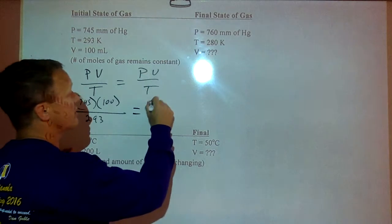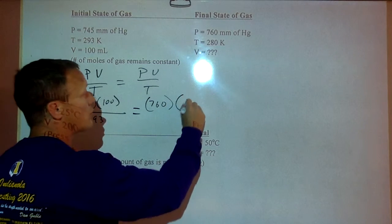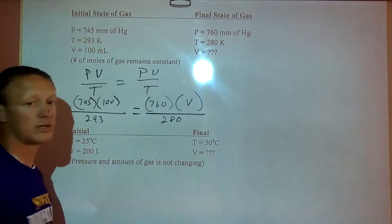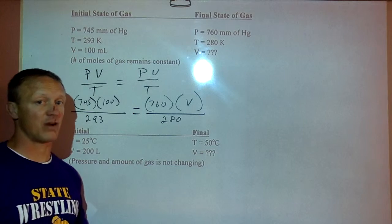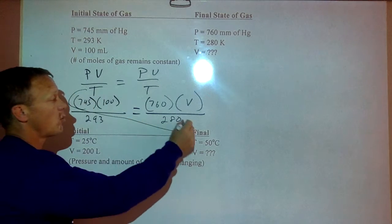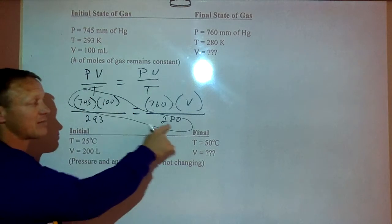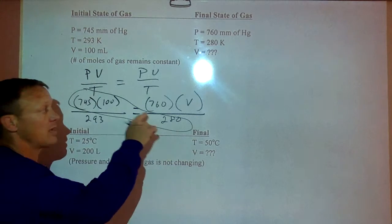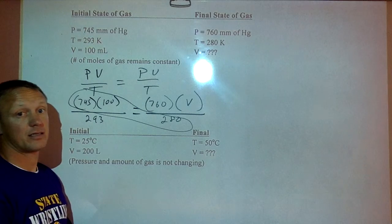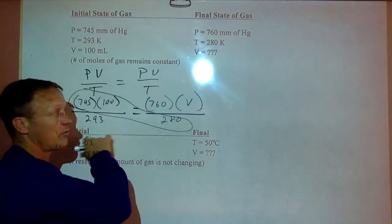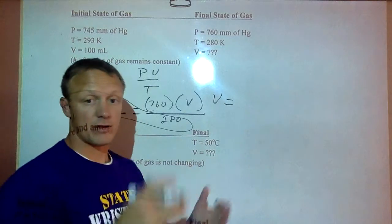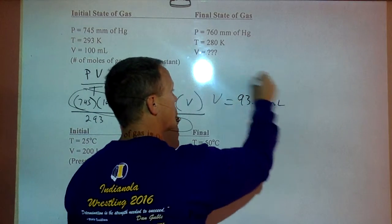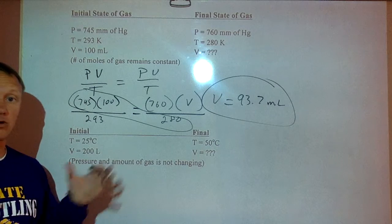If we change the pressure to 760, what is our new volume going to be over T when the temperature is 280? I always cross multiply where there's not a variable. Type those in your calculator. Divide by every number left over. So multiply where there's no variable, then divide by the ones with my variable. You can just type that in your calculator, hit equals once. You get an answer of 93.7. That is a volume in milliliters. We said it should have gone down from 100 because it was getting colder and had more pressure on it.